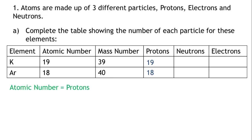The number of protons equals the number of electrons in an atom. Therefore, the number of electrons in potassium, K, is 19, and the number of electrons for argon, Ar, is 18.